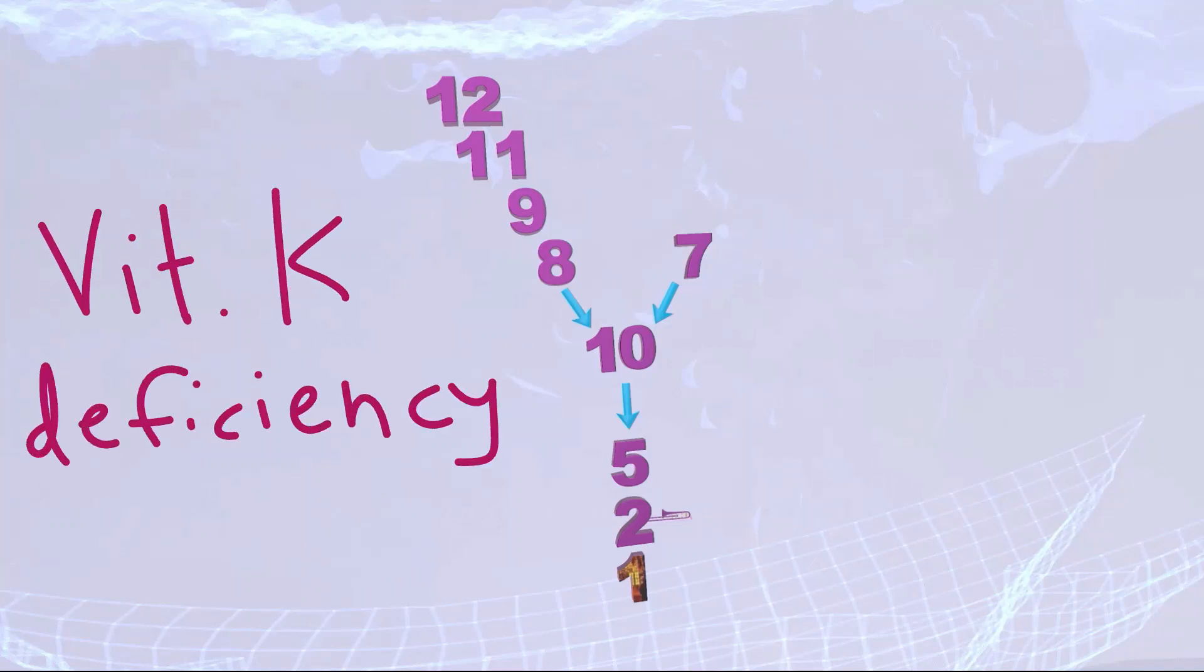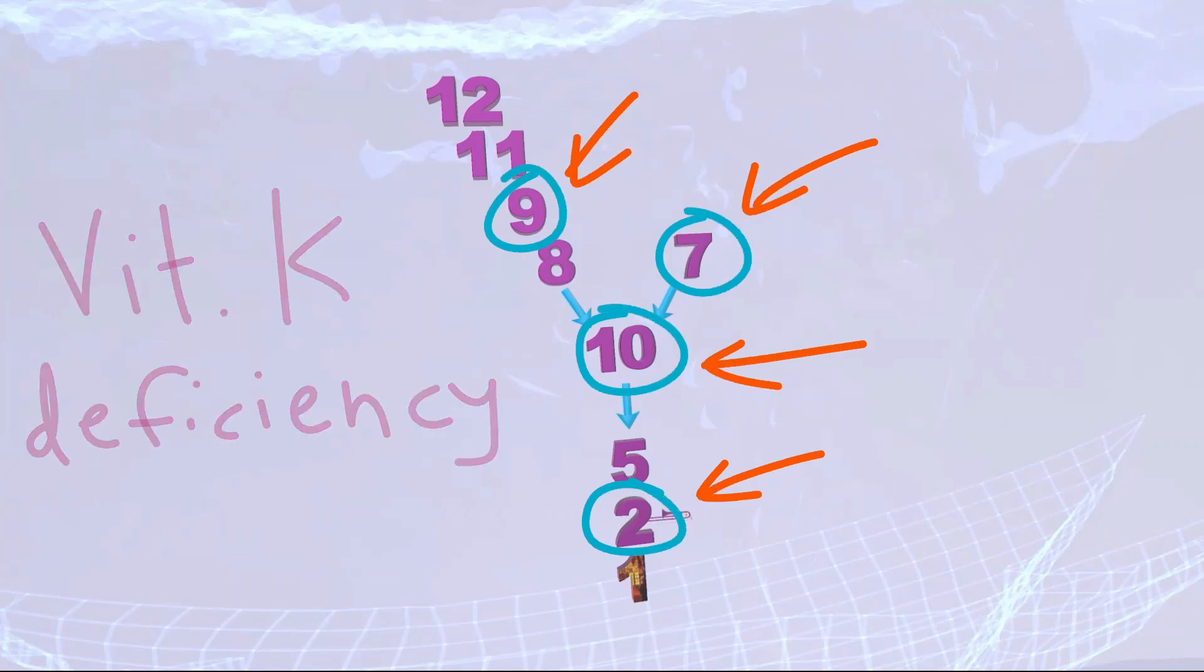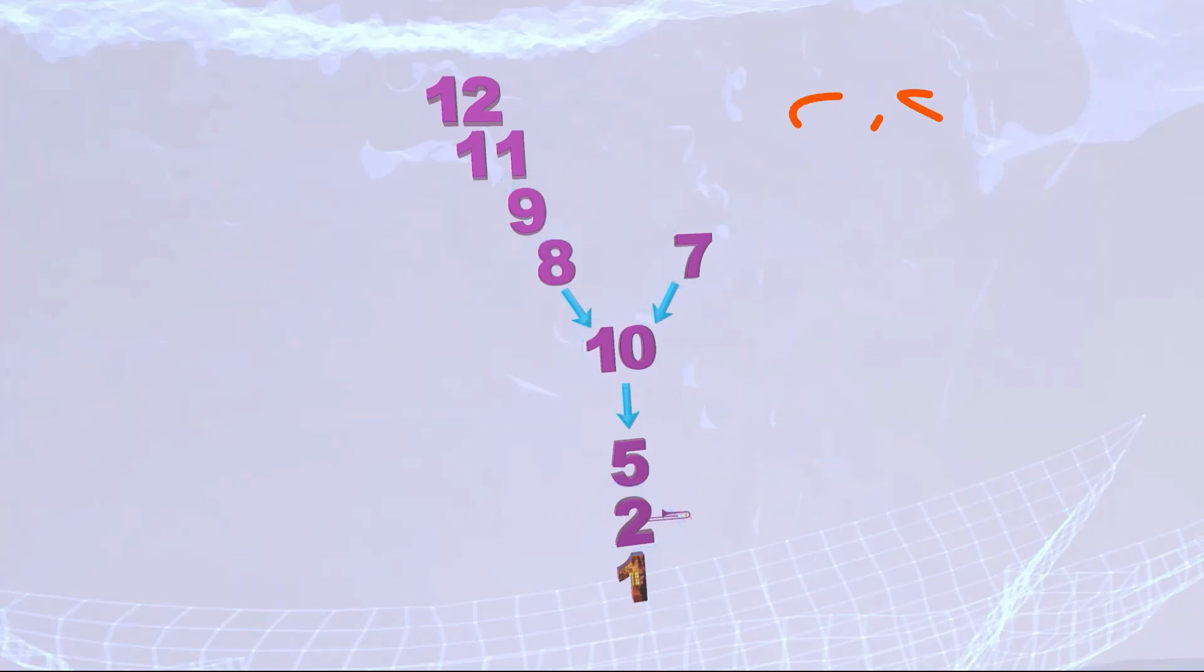This is in contrast to vitamin K deficiency. Vitamin K is important for activation of 2, 7, 9, and 10, as well as protein C and S. So again, 2, 7, 9, 10—this involves factors from all of these pathways, and therefore in vitamin K deficiency, both the PT and the PTT will be elevated.